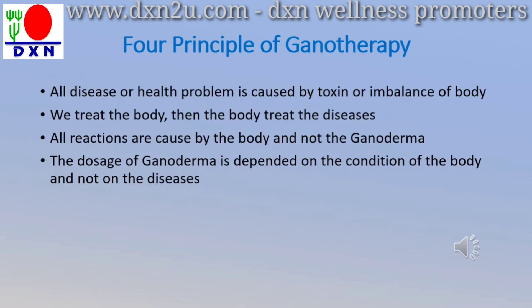The third rule is that all reactions are caused by the body and not by Gendronoma. When people take Gendronoma, there are a lot of ailment reactions — do not get worried, because this is not caused by Gendronoma, it is caused by the body. The fourth rule is that the dosage of Gendronoma is dependent on the condition of the body and not on the disease. Asking how many RG or Spirulina to take for diabetes is a wrong question, because the dosage depends on the body condition, not the disease.